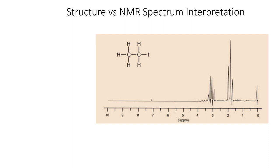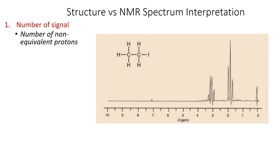There are four basic pieces of information from an NMR spectrum. The first is the number of signals — we look at how many signals are present in the spectrum. For example, if there are three signals, one of them is the TMS reference compound, which we ignore. So there are two signals for the particular compound — CH3 and CH2 — which corresponds to the iodoethane molecule.